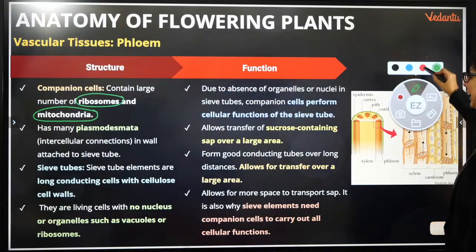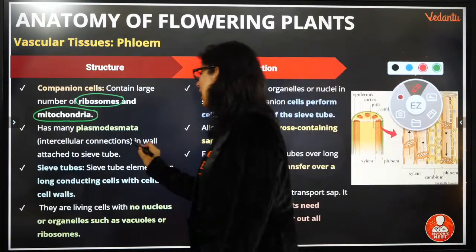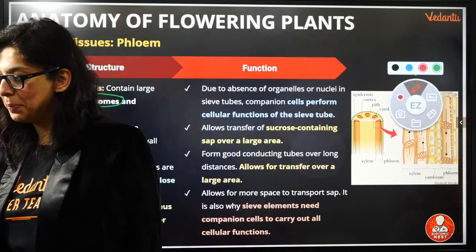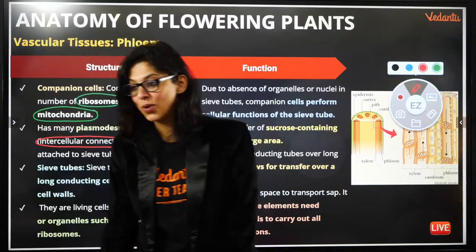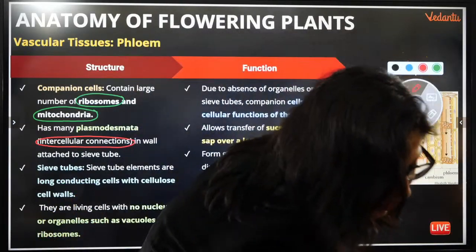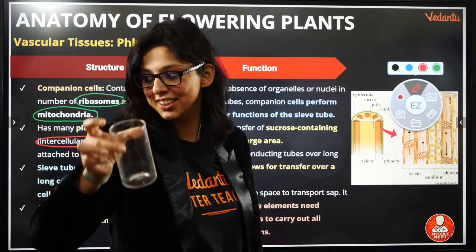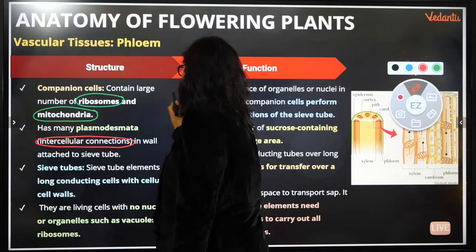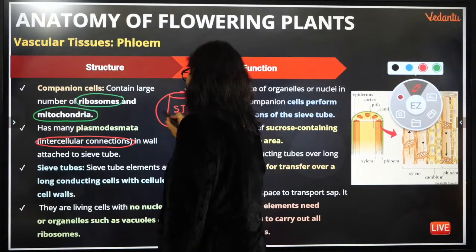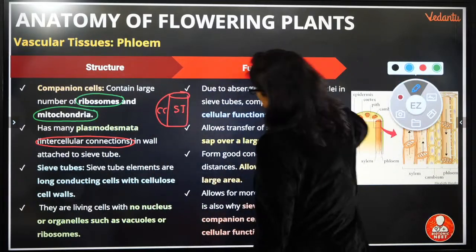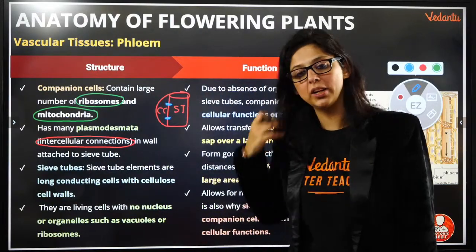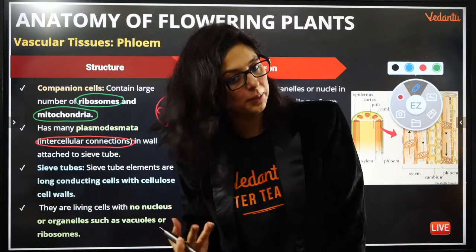Companion cells are parenchymatous cells connected to the sieve tube cells via plasmodesmata. Companion cells have a nucleus; sieve tube cells are living cells without a nucleus. So information needs to come from companion cells into sieve tube cells. Due to the absence of organelles and nucleus in sieve tubes, companion cells perform the cellular functions of the sieve tube. The companion cell decides where the food goes — up, down, or elsewhere — and communicates via plasmodesmata.